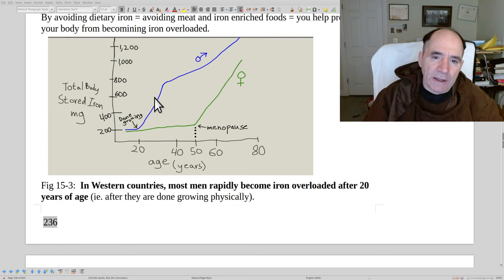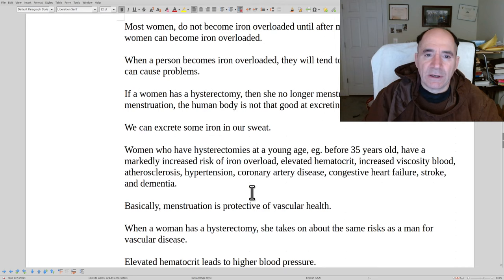Women, like I said, they don't tend to become iron overloaded until they're post-menopause because they're menstruating. Menstruation really protects women in a lot of ways. We talked about how it lowers their hematocrit, it keeps the red blood cells more flexible.